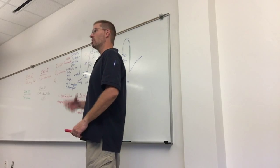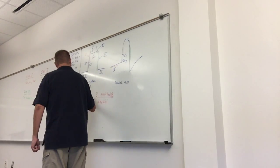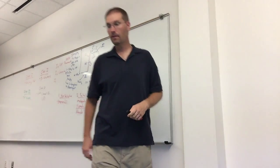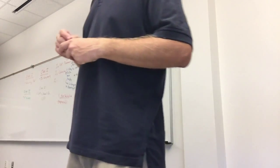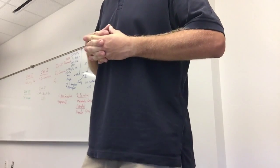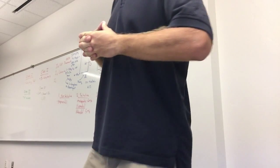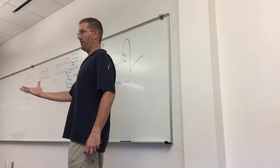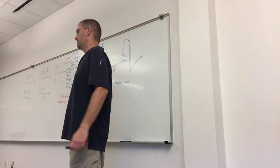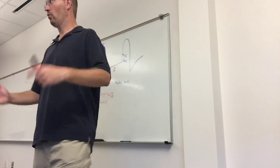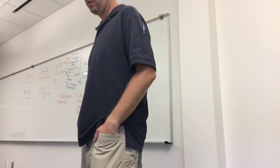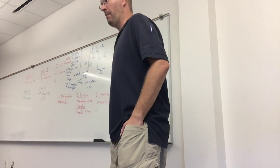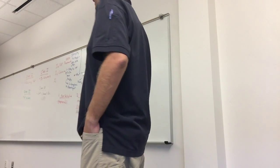Metoprolol and atenolol: the dose on both is 5 milligrams, very slow IV over two to five minutes. With atenolol, you can give a second dose in about 10 minutes. With metoprolol, the standard approach is three doses of 5 milligrams each — giving 15 milligrams total — with metoprolol given over about five minutes per dose, so essentially 1 milligram per minute.